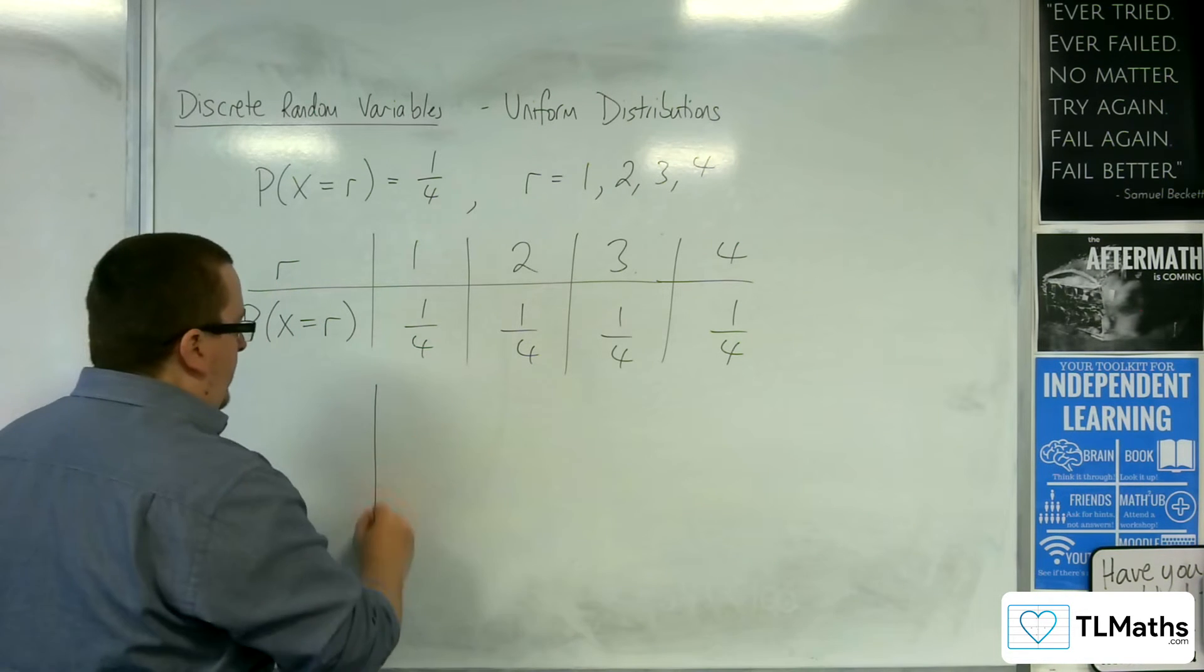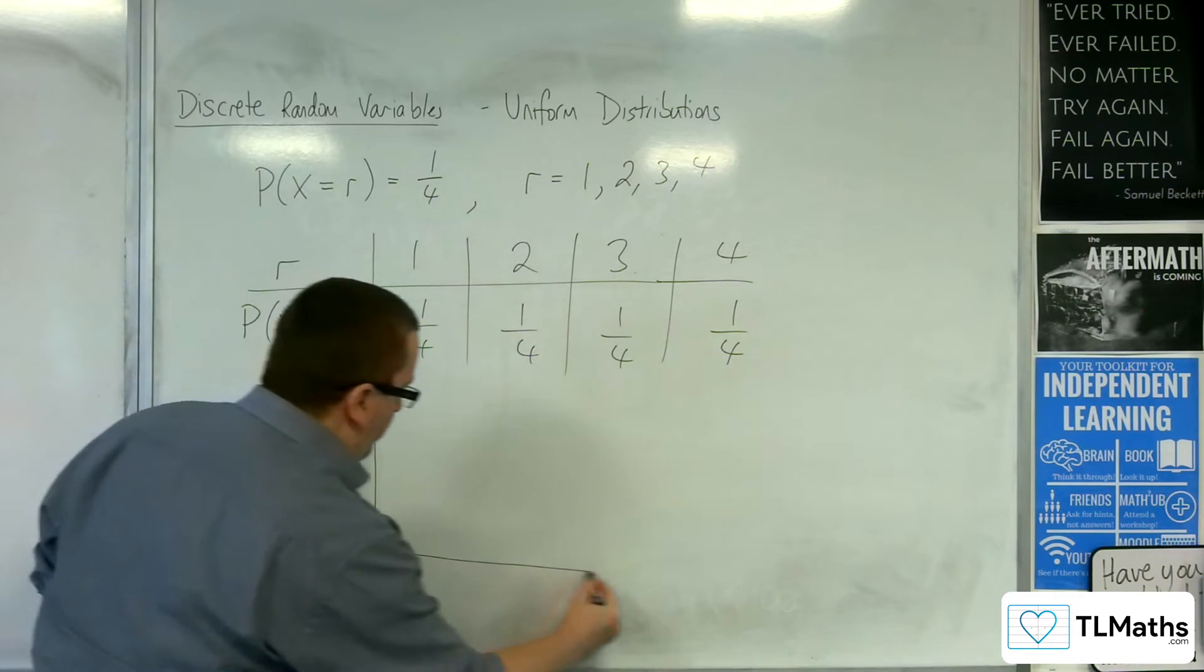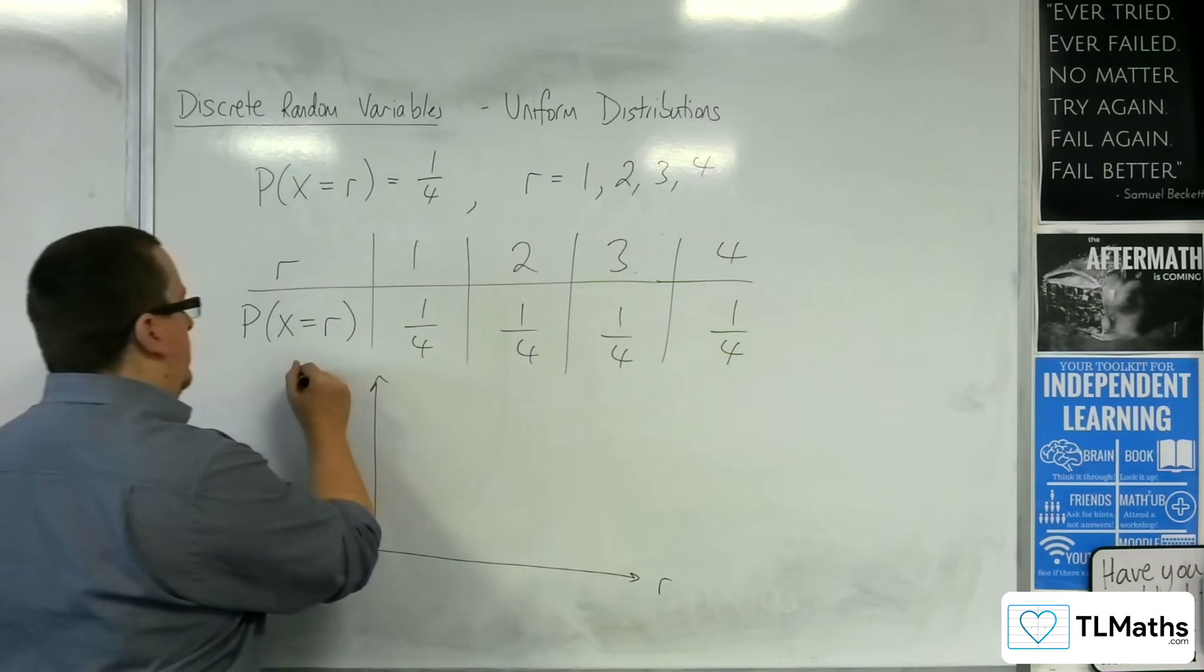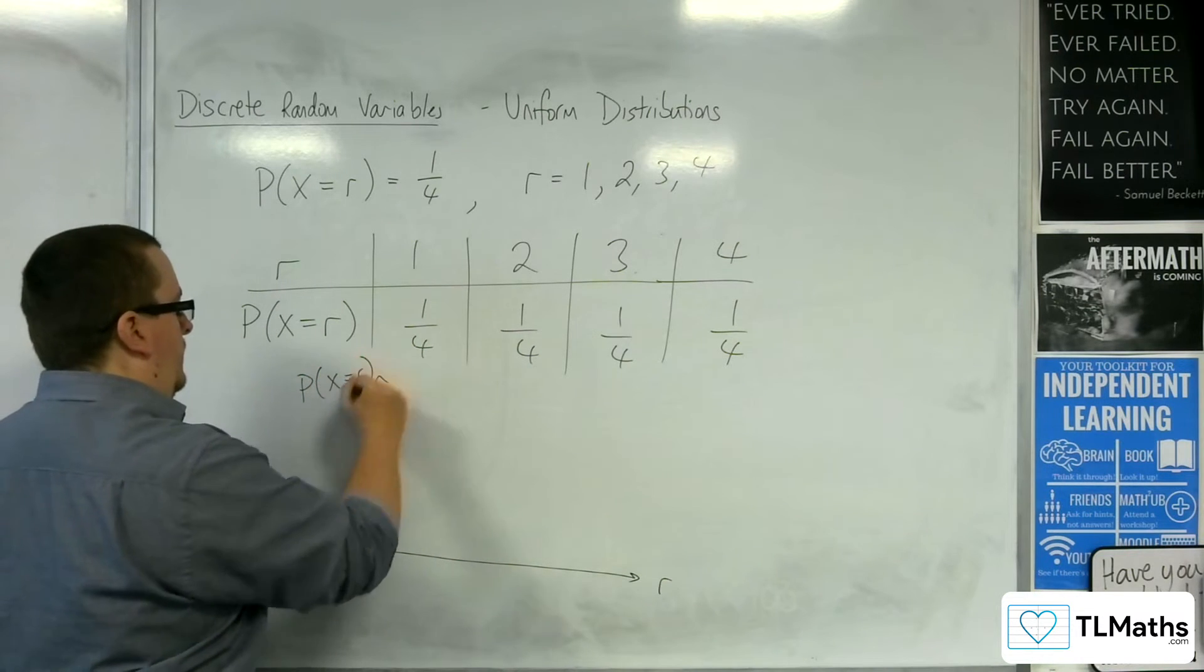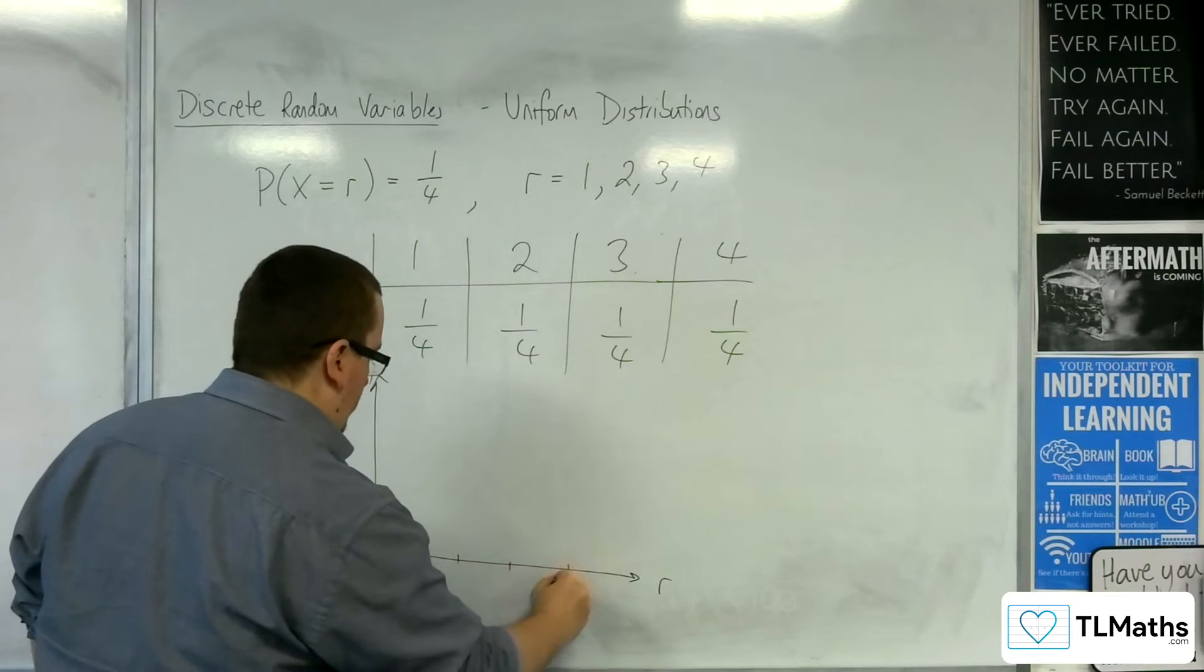And consequently, what that looks like as a stick graph would look like this. So, one, two, three, four.